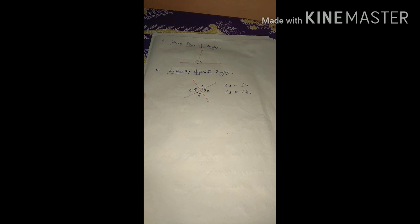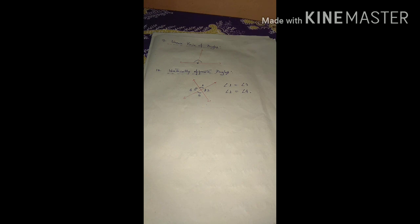So up to number ten we have done. Your task is to write each and every topic with its definition and diagram in your classwork copy. In the next video we will continue, solve exercise and example questions, and complete chapter six and chapter seven, then move to chapters three, four, and five. Thank you.